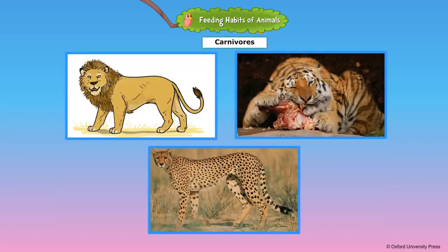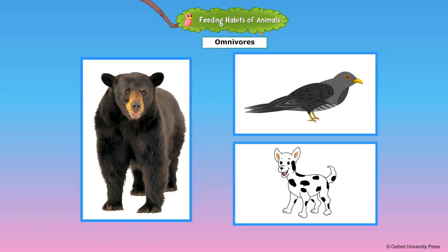Some animals eat the flesh of other animals and are known as carnivores. Carnivores mostly feed on herbivorous animals. Some carnivorous animals are lion, tiger, cheetah, leopard, wolf, owl, and eagle.